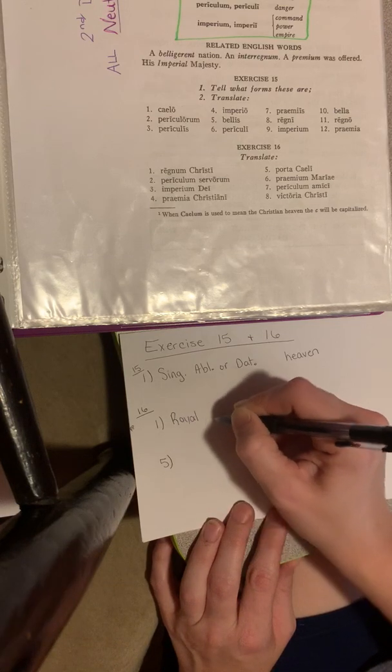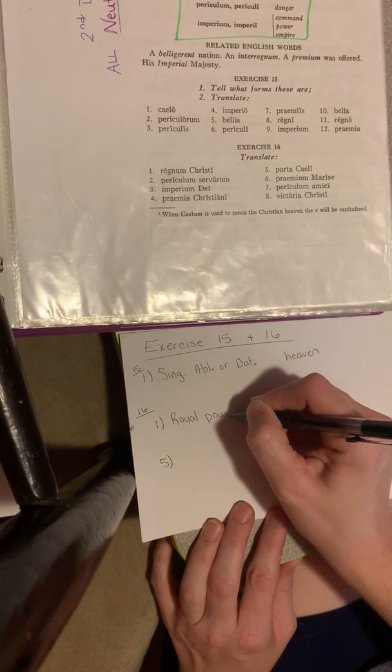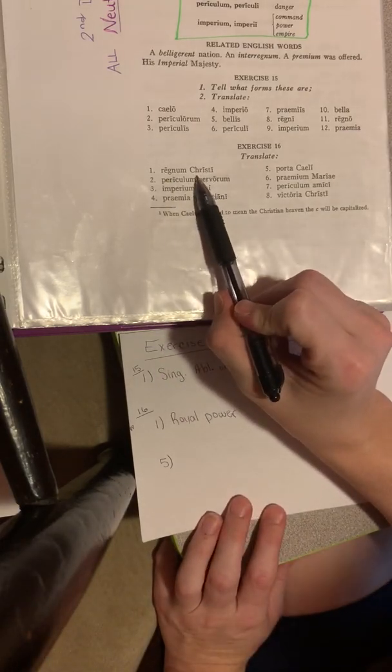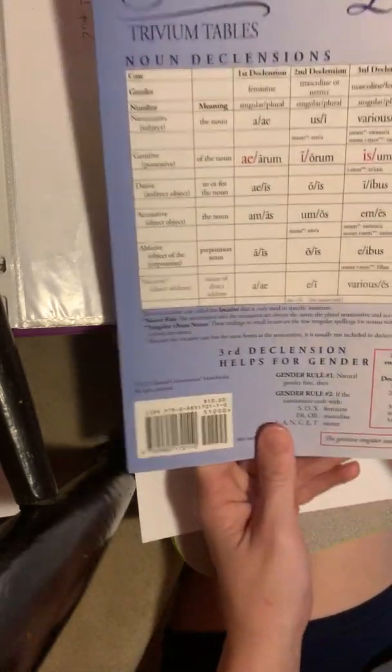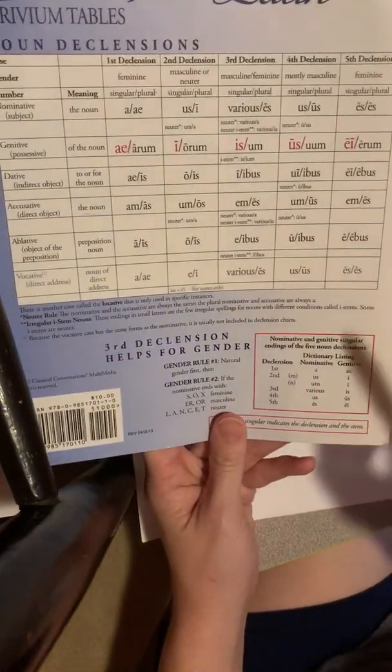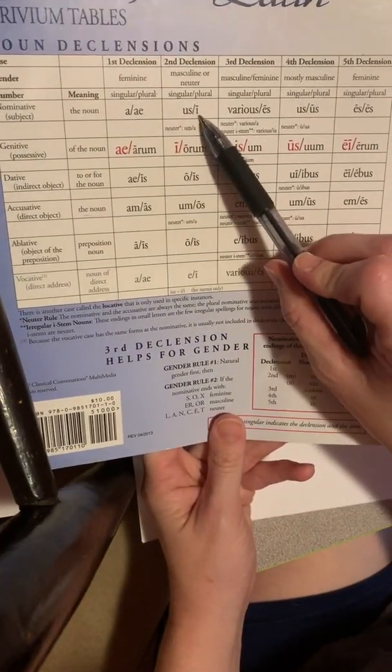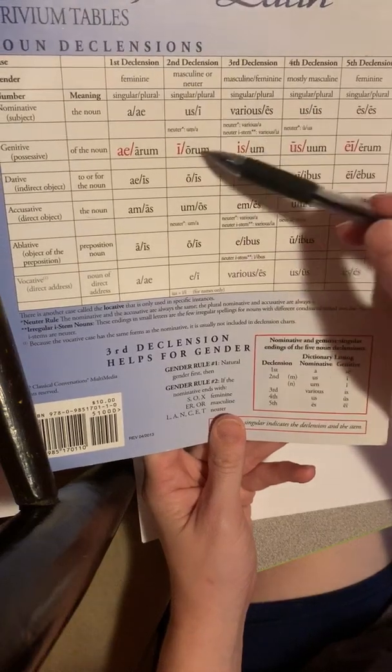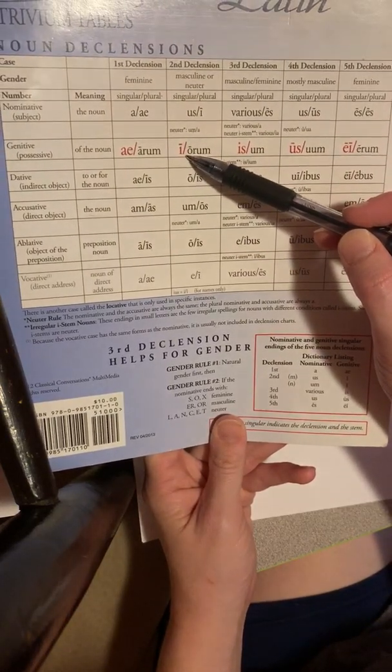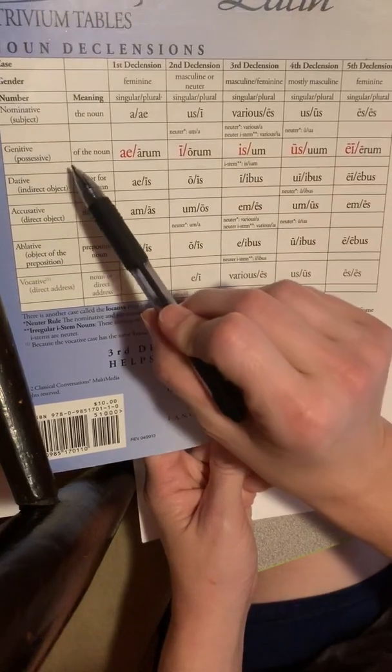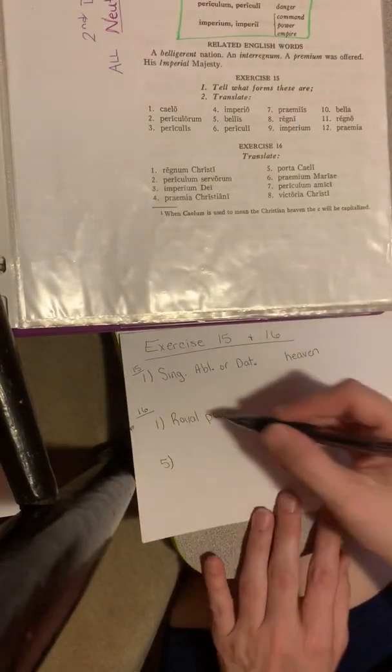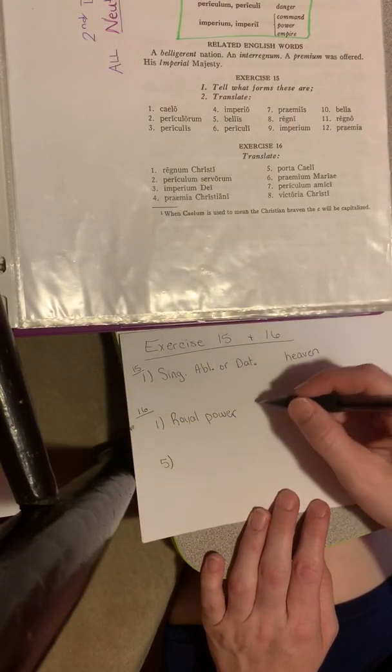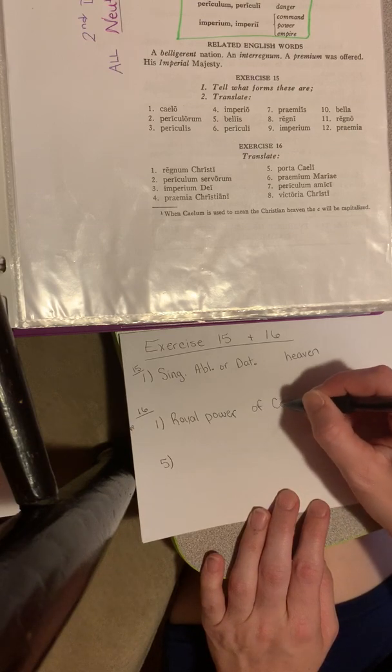Royal power is what regulum means. Christi with an I. Well, it's meaning Christ. So we're probably not going to mean plural here, which leaves us just the possessive of Christ. So of Christ. So we're talking about the royal power of Christ.